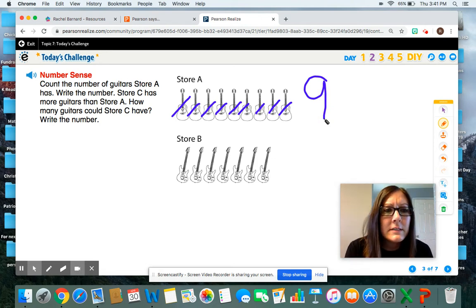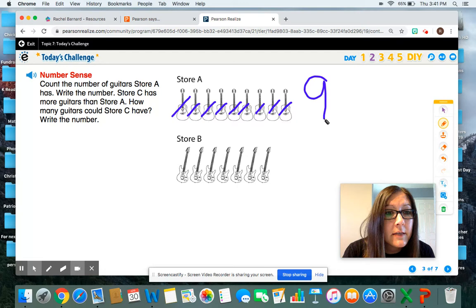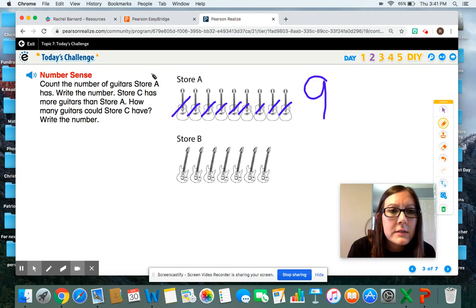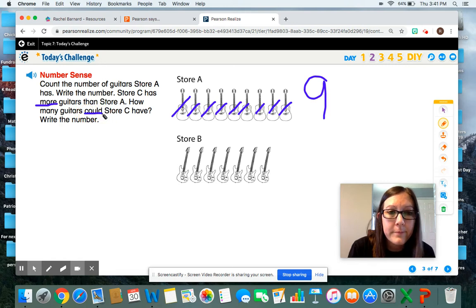Now it says store C has more guitars than store A. Do you see any information for store C? I don't either. Now it says how many guitars could store C have? Listen to those two clues. Store C has more than store A. So how many could store C have?